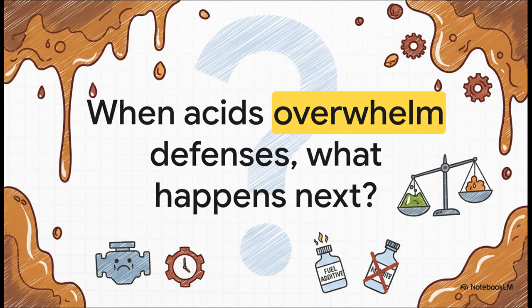This is such a critical moment. When the TAN number climbs past the TBN number, it's called a crossover, and it's bad news. The oil isn't just failing to protect the engine from corrosion anymore. At this point, the oil itself can become corrosive, and it starts actively eating away at the metal parts.